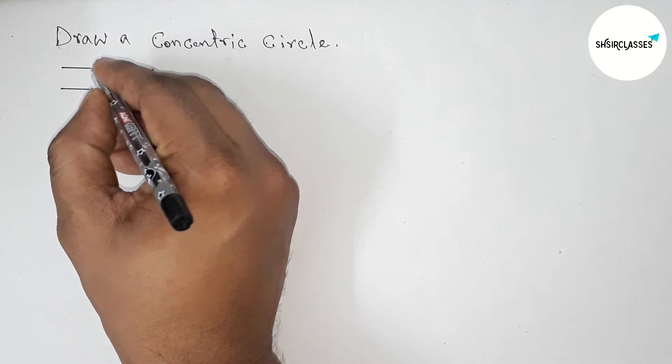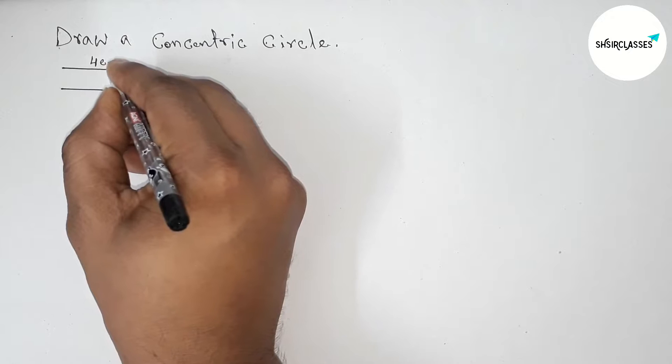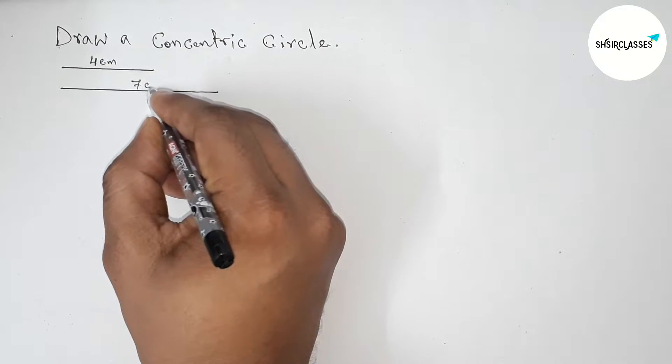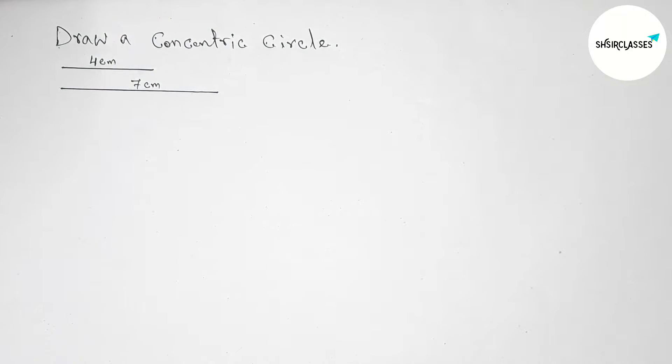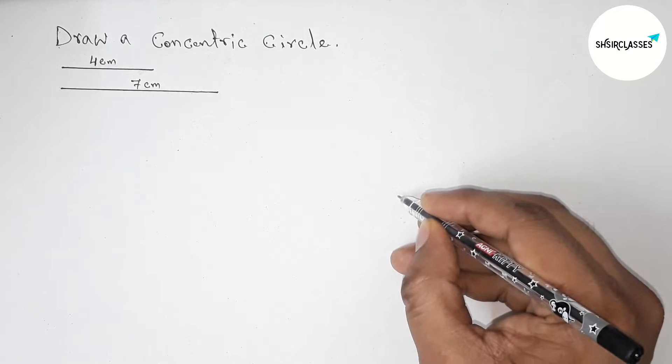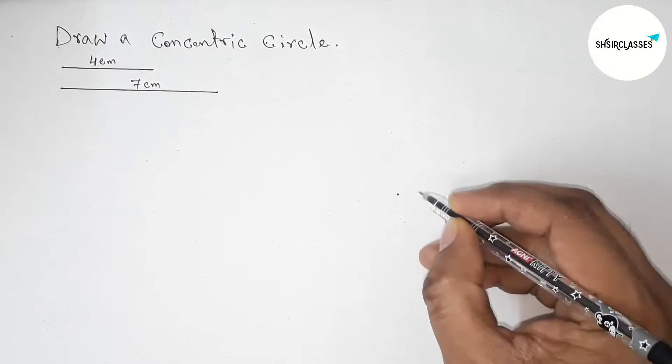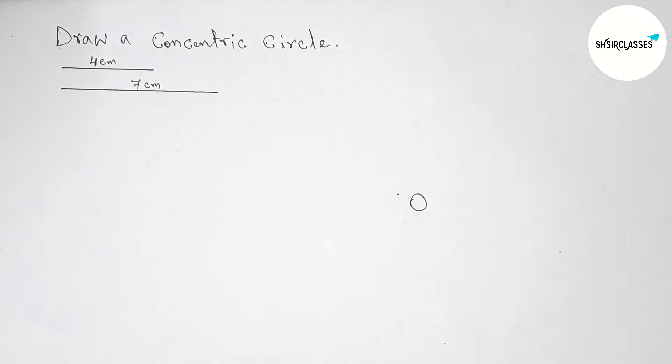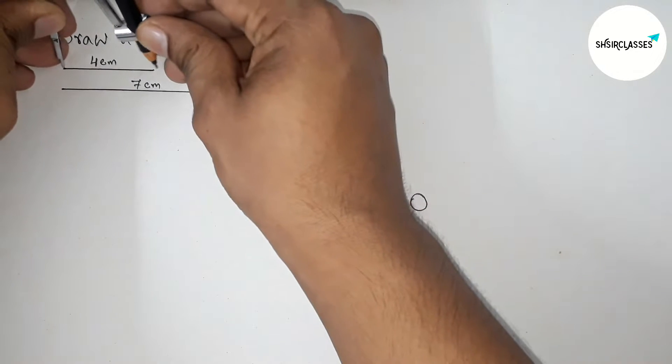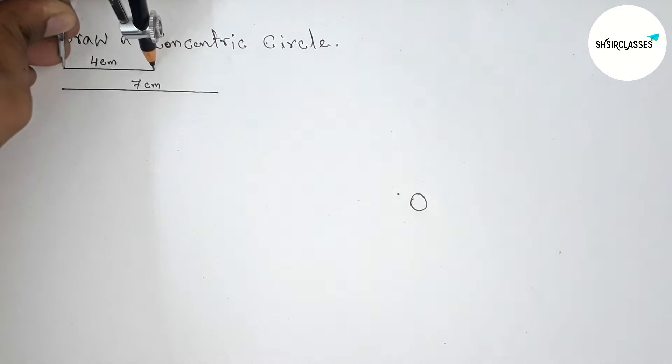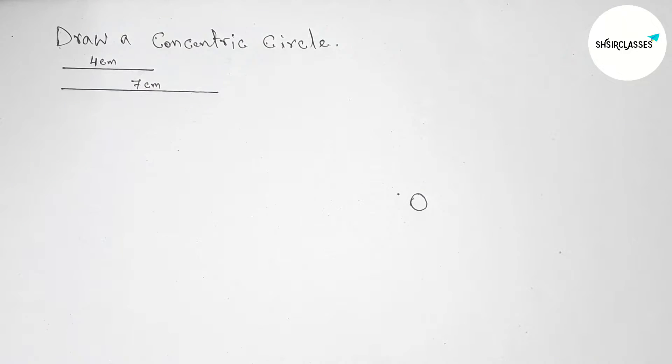This line is four centimeter and this line is seven centimeter line segment. Next, taking here a point, so taking here point O. Next, taking the radius four centimeter first with the help of compass and putting the compass on the point O here.